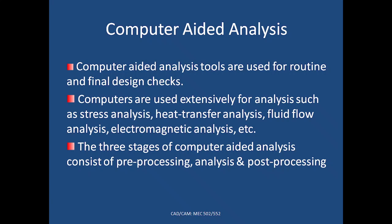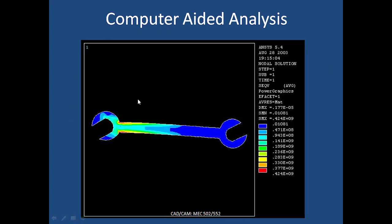Every engineering software, no matter what application, has these three stages: pre-processing, analysis, and post-processing. This is an example of computer-aided analysis of a spanner. The color variable depicts areas of high stress — red colored areas have stress of the order of 0.424×10⁹, while blue areas have very low stress. The intermediate areas are shown in between. Areas in red are where you need to focus for strengthening.